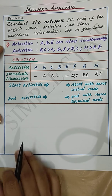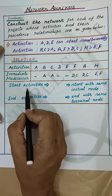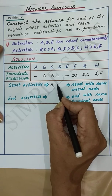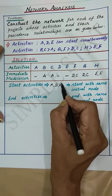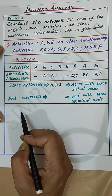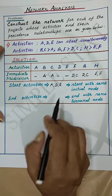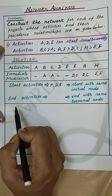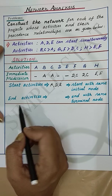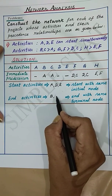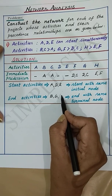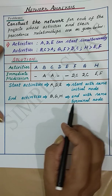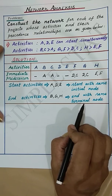The start activities are the activities with no predecessors. Here A, D, and E are the start activities, and they start with the same initial node. The end activities are those with no successors — they are B, G, and H. These activities will end with the same terminal node.